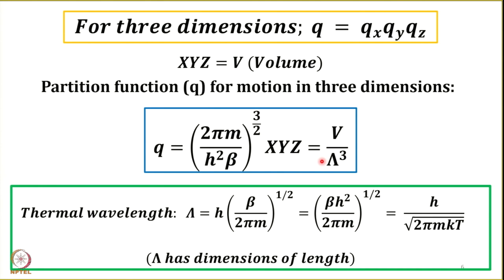Let us discuss the significance of λ. If (2πm / h²β)^(3/2) = 1/λ³, then λ = √(βh² / 2πm). This simplifies to λ = h · √(β / 2πm). Since β = 1/kT, an alternate form is λ = h / √(2πmkT). You can use whichever form is more convenient for the problem at hand.